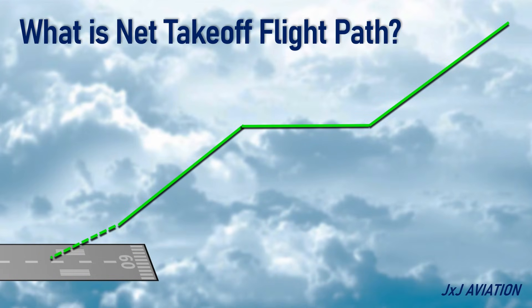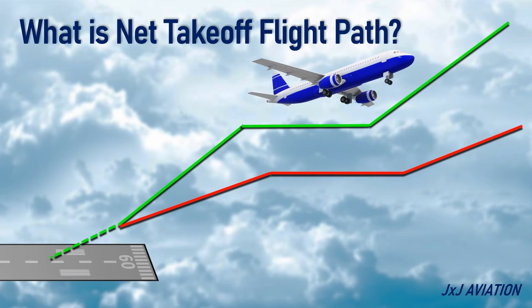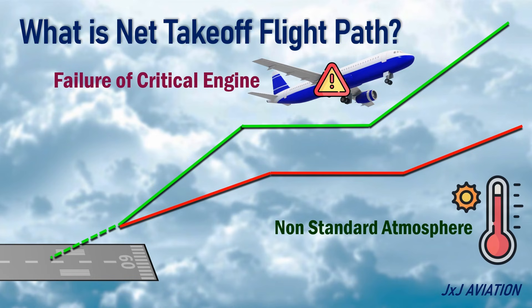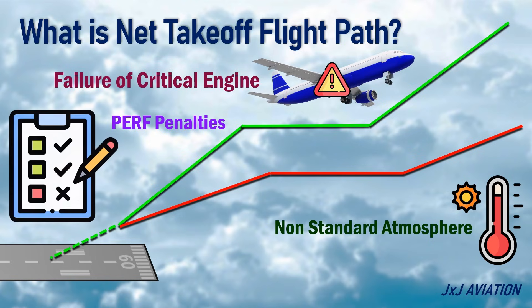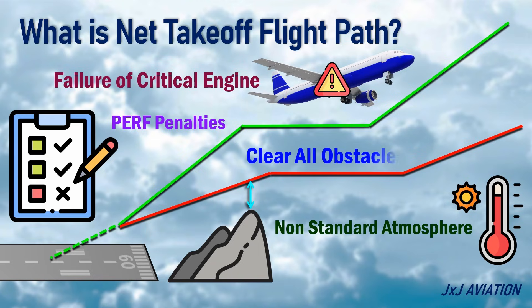What is net takeoff flight path? The net takeoff flight path is the flight path that the aircraft would follow because of factors such as failure of the critical engine, non-standard atmospheric conditions, and inclusion of performance penalties. This flight path is needed to ensure the aircraft clears all obstacles during takeoff.